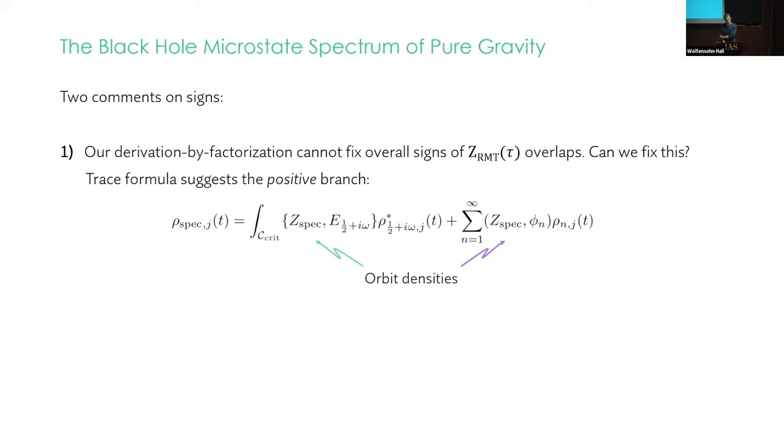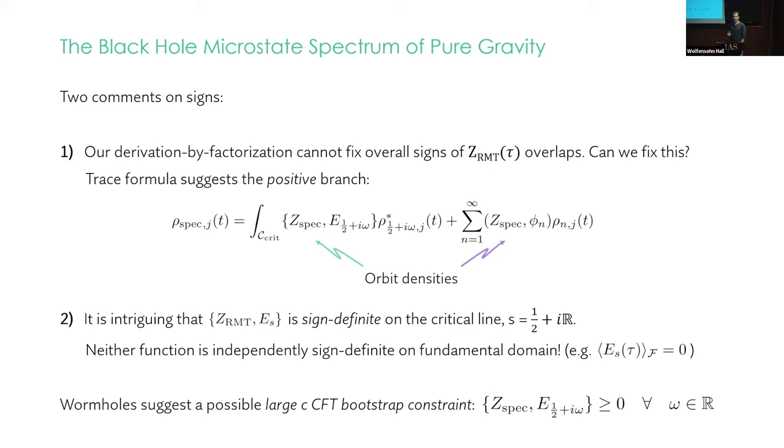Two comments on signs. So you might have noticed this derivation by factorization can't fix the overall signs of the overlaps. We extracted them squared. Can we fix this? We haven't been able to definitively fix the signs. But the trace formula loosely suggests that it's the positive branch that is the right one, because if we think of these as orbit degeneracies, then that's the physical interpretation. That remains to be proven. Nevertheless, whatever the sign, it's intriguing that the overlap is sign definite on the critical line, because neither function is independently sign definite on the fundamental domain. So when we take their inner product, there's no reason to expect that the result will always be positive for all values of this parameter. So thinking about wormholes in holography suggests that all large C CFTs obey this bootstrap constraint. That this constraint on their chaotic spectra always holds. It would be nice to think more about this.